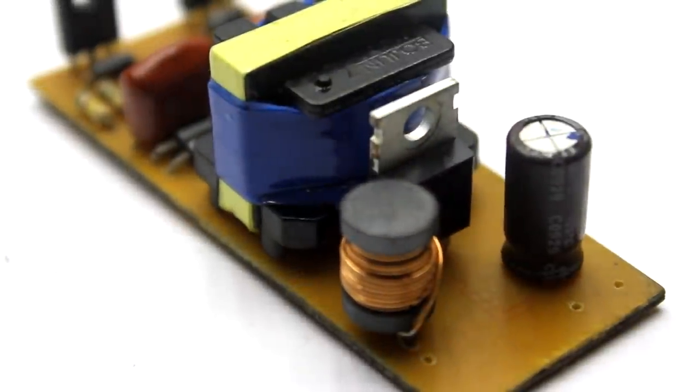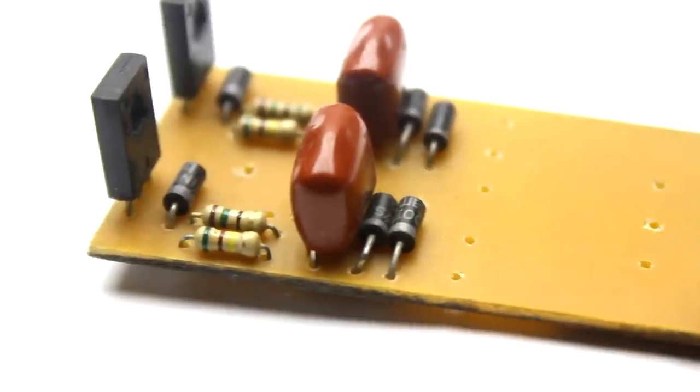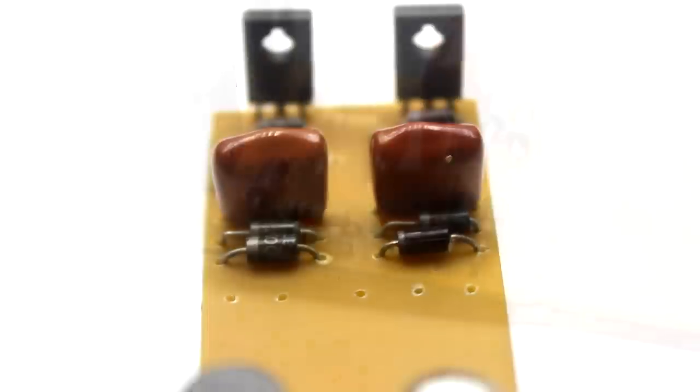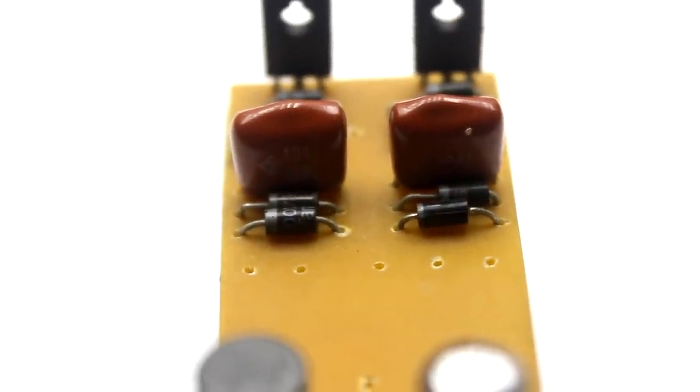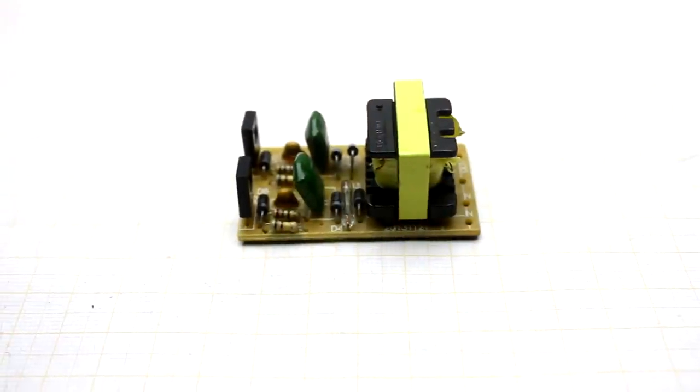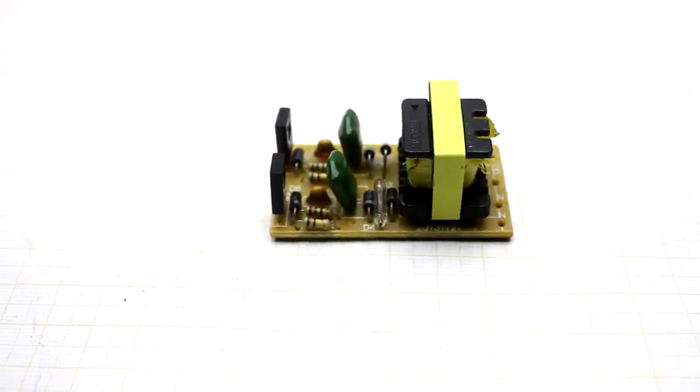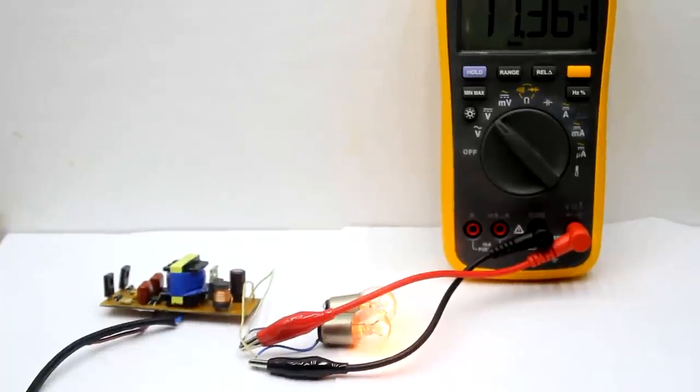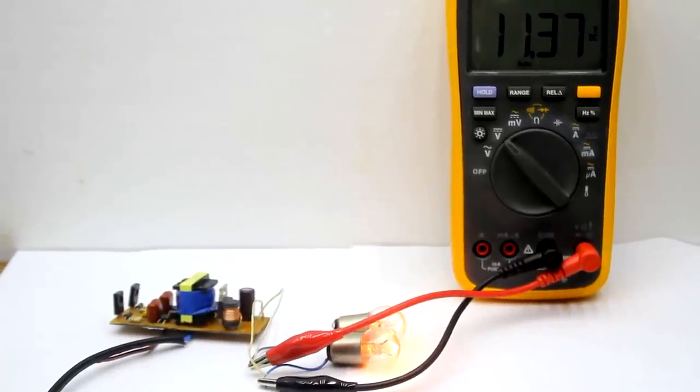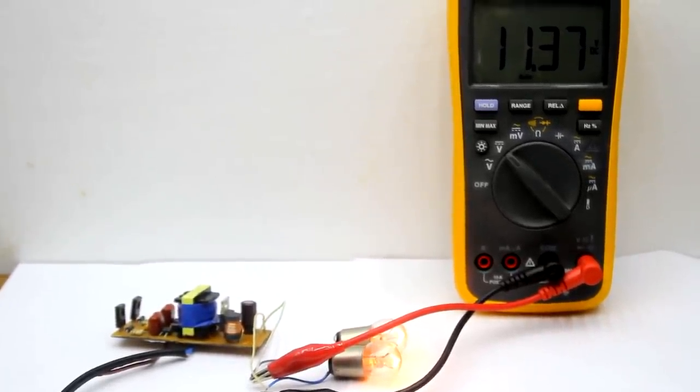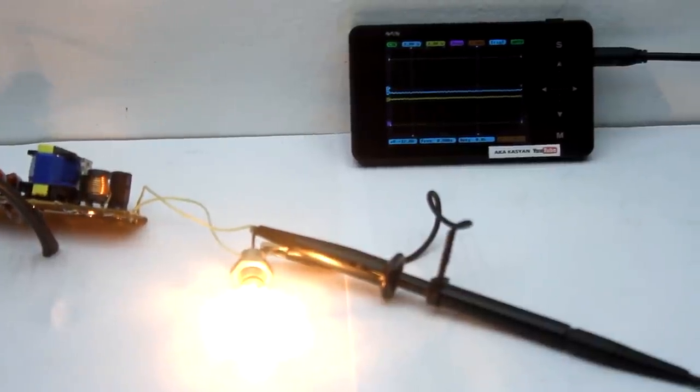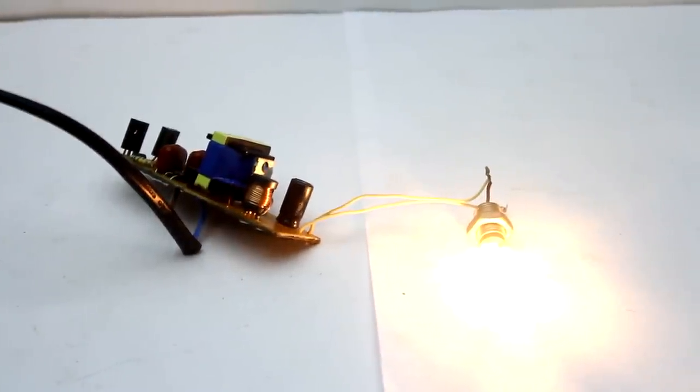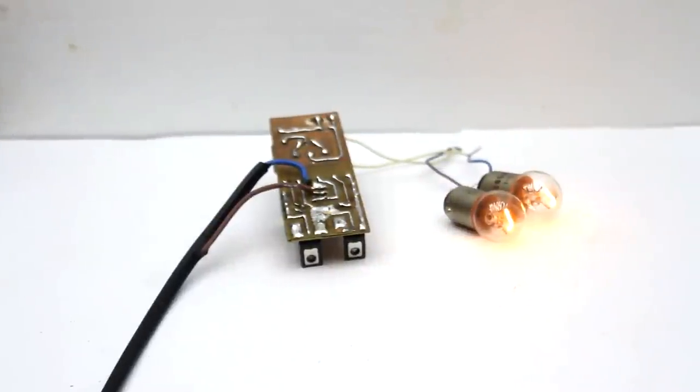Friends, in the description you will find a full archive of the project with a circuit and a printed circuit board. Also, there are links to the purchase of all the components that are needed to assemble this power source and to the finished electronic transformers. I will try to make another video during which we will load the power source, look at the pulsation and the voltage drop under a certain load, in order to understand whether such a power source can be used for serious purposes.